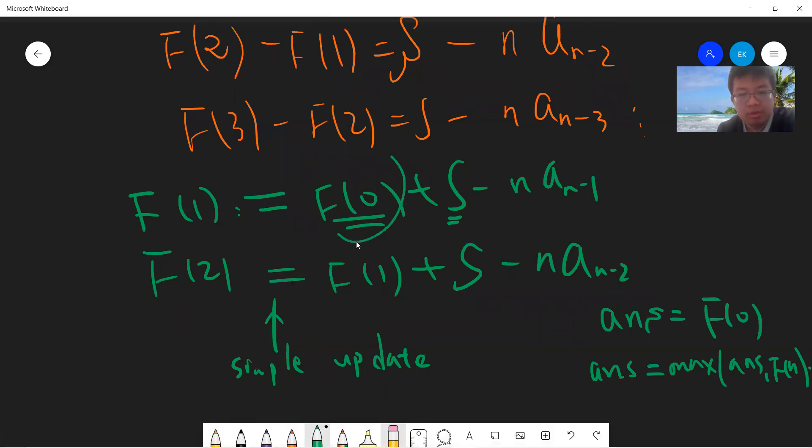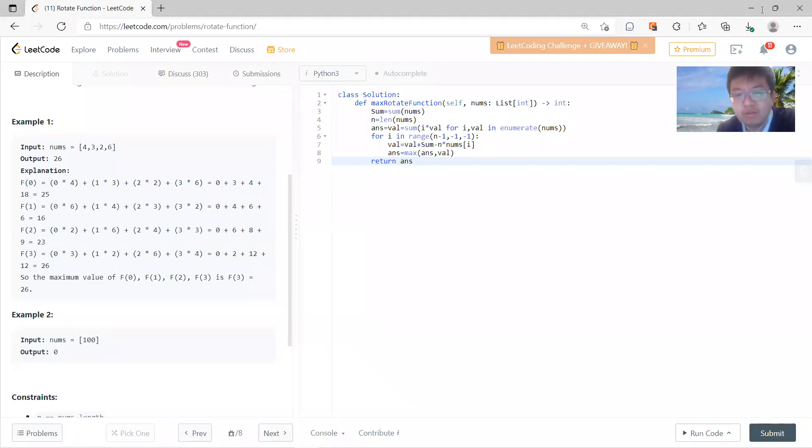This is your value: value plus sum minus n times some particular term, which defines the next value. So value equals value plus sum minus n, and the answer is the maximum of answer and value.